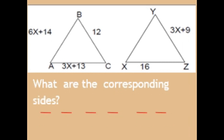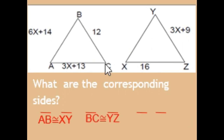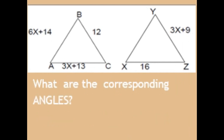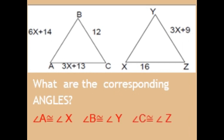The corresponding sides are: side AB is congruent to side XY, side BC is congruent to side YZ, and side AC is congruent to side XZ. The corresponding angles are: angle A is congruent to angle X, angle B is congruent to angle Y, and angle C is congruent to angle Z.